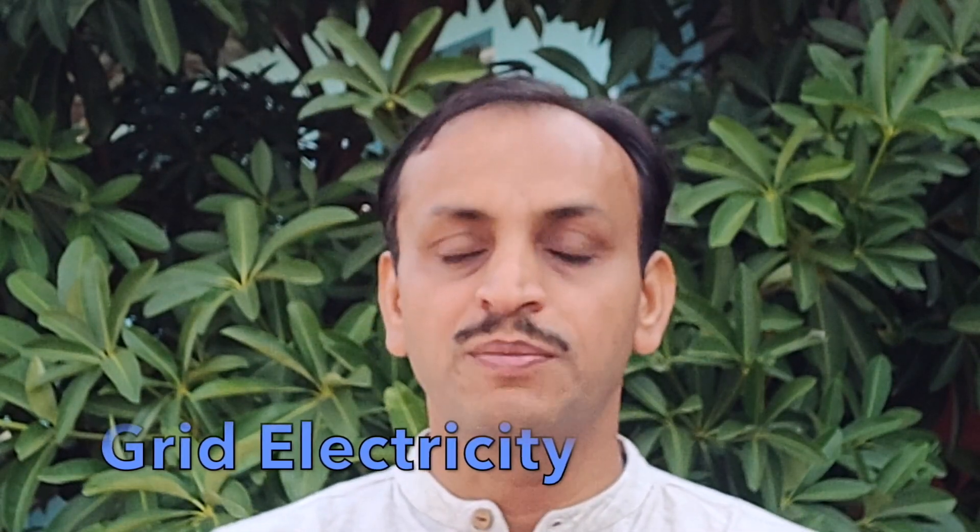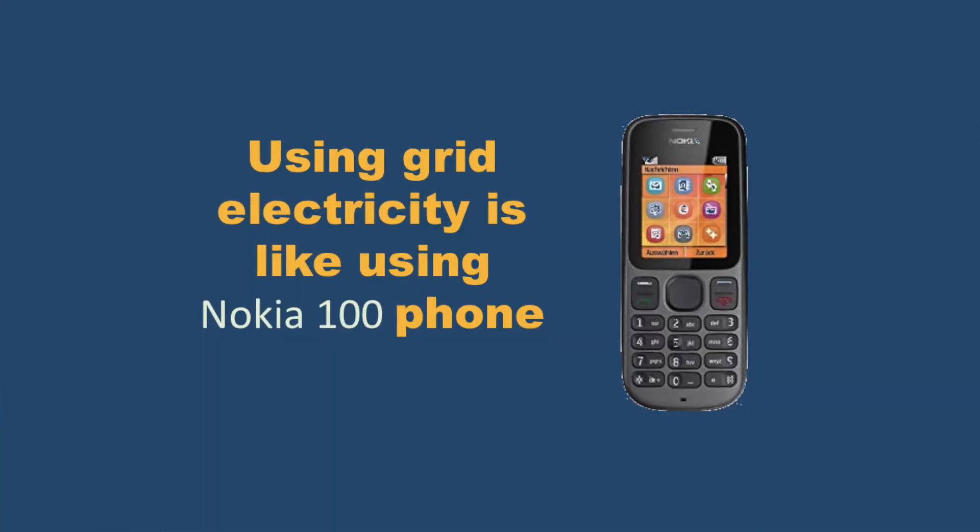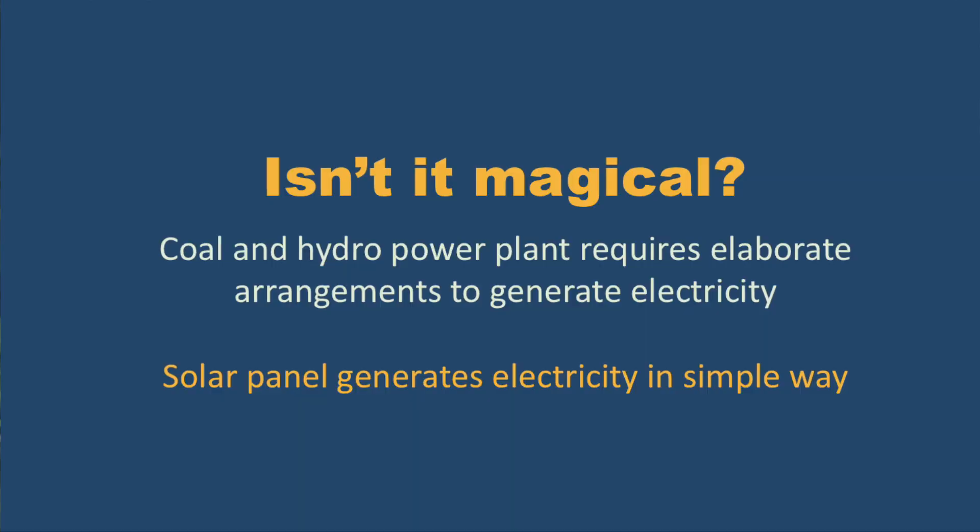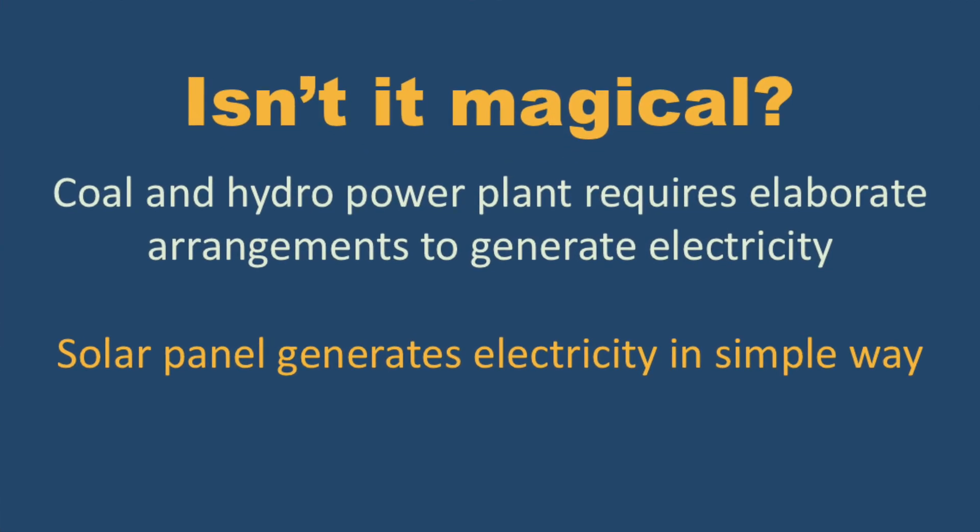With grid electricity, power is transported hundreds of kilometers before it reaches your house. This grid-based supply is a very old technology — almost a hundred years old. Using grid electricity is like using an outdated Nokia 100 phone while the whole world has moved on to smart Android-based phones. Solar technology, by contrast, is very simple — just put the solar panel outside the house and it generates electricity. Using solar panels to generate our own electricity is a smart, advanced technology that benefits you, the environment, and the government, since the government spends a lot of money importing energy.